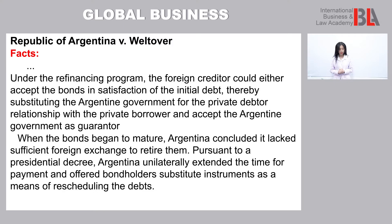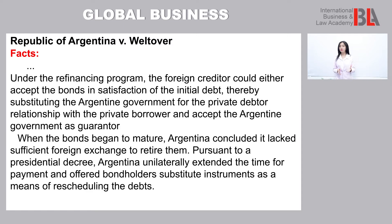When the bonds began to mature, Argentina concluded it lacked sufficient foreign exchange to retire them. Pursuant to a presidential decree, Argentina unilaterally extended the time for payment and offered bondholders substitute instruments as a means of rescheduling the debts.